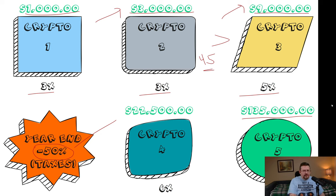And I'm using really, really low examples, you know, 3X, 3X, 5X, 6X. You could easily end up doing an 8X, an 11X, an 8X, a 14X.